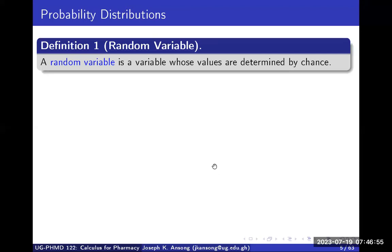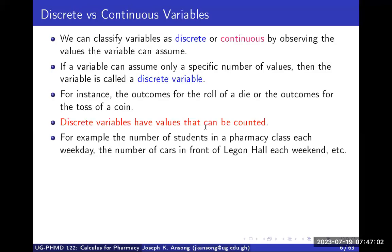By definition, a random variable is a variable whose values are determined by chance or by some probability. We can classify variables as discrete or continuous. The difference is that if a variable assumes specific numbers or values — in other words, if you can count the values of the variable — then it is said to be a discrete variable.